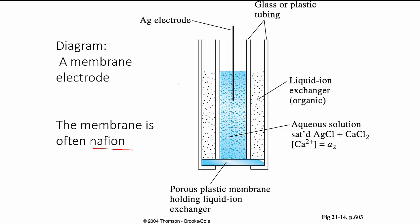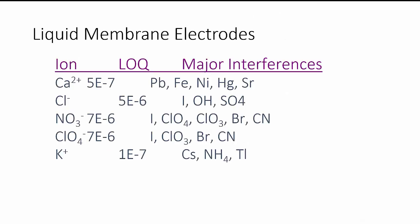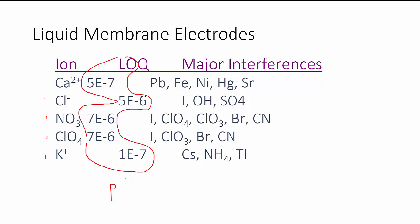A table of liquid-based ISEs shows calcium, chloride, nitrate, perchlorate, and potassium with their LOQ ranges — down to around 10⁻⁷ M, so relatively low concentrations. You're going to have some interfering species: lead²⁺, iron²⁺, and others. Based on size and charge, there are interfering species you have to watch out for with any of these electrodes.